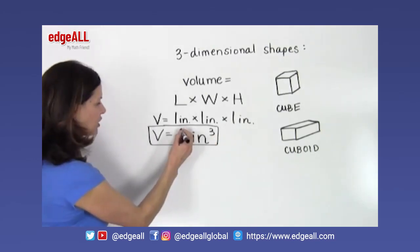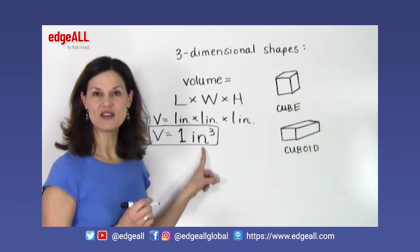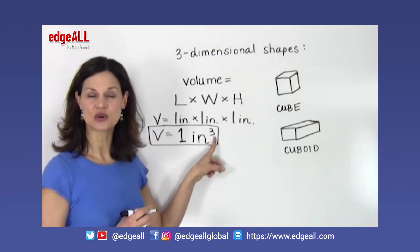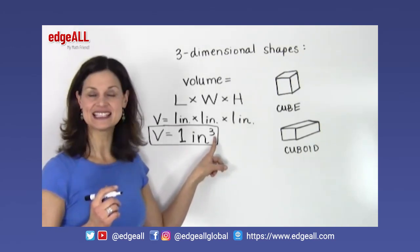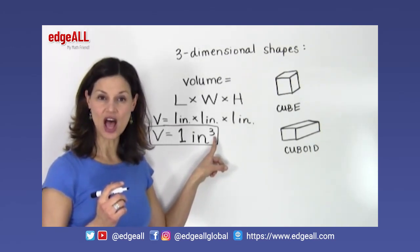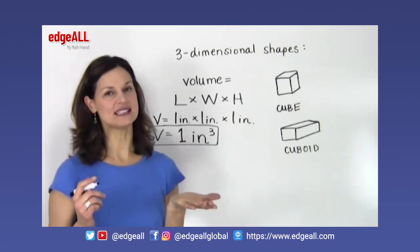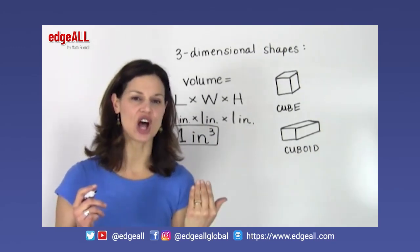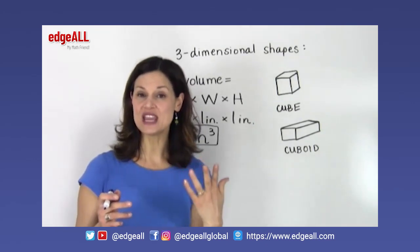And with volume, we want to make sure that whatever our unit of measure is, we have a 3 here in the superscript to indicate that we're measuring the space inside of our three-dimensional object, and it has to be cubed. So if, for example, the sides of this cube were each 1 meter long, the volume would be written as 1 meter cubed.